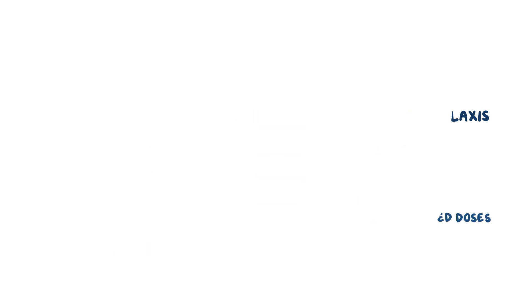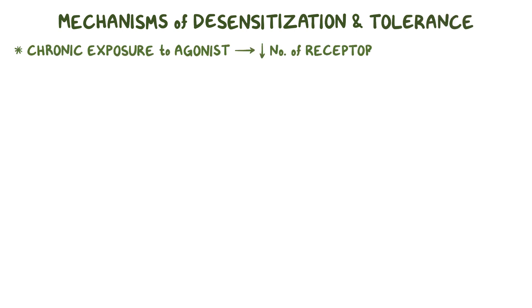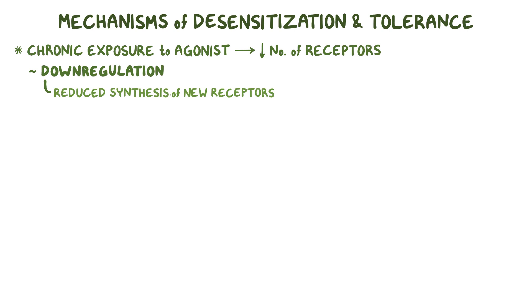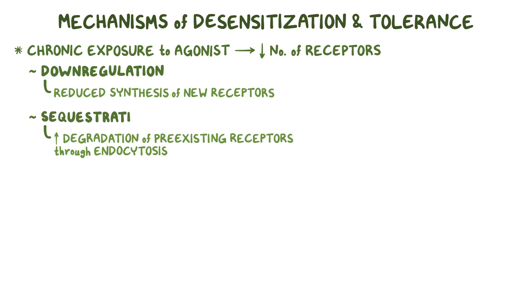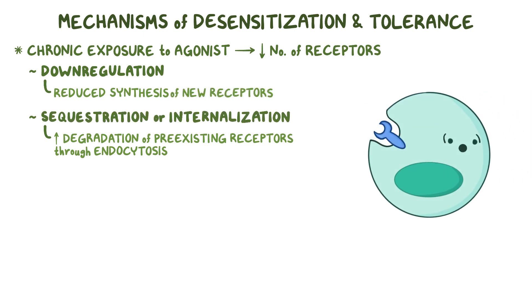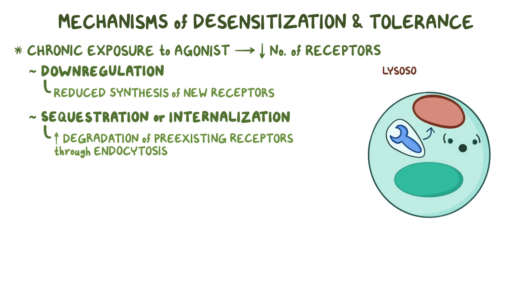There are several mechanisms responsible for these phenomena. First, chronic exposure to agonists causes a decrease in the number of receptors. This decrease could result from the reduced synthesis of new receptors, also known as downregulation. Also, chronic exposure increases the degradation of pre-existing receptors through endocytosis, also known as sequestration or internalization. This is where the cell swallows up the receptor in vesicles, pinching off the cell membrane, and sends them to the lysosome for digestion.